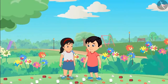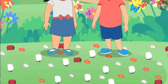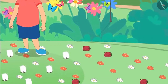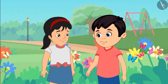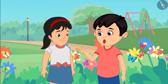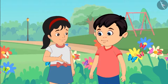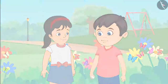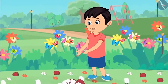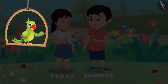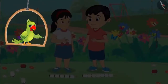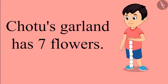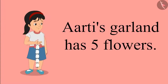Spring is here. Chotu and Aarti are playing in the garden, which is full of blooming flowers strewn all around. Aarti, why don't we make a garland out of these flowers? Yes Chotu, I will go and get a bundle of thread. Until then I will gather some flowers. Chotu used 7 white flowers to make his garland and Aarti used 5 white flowers in her garland.